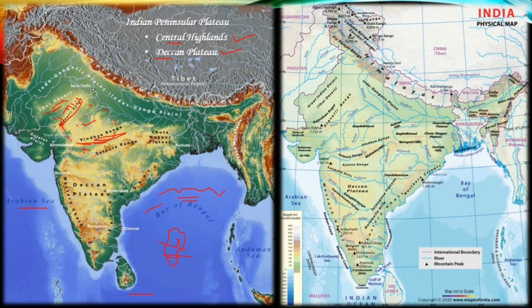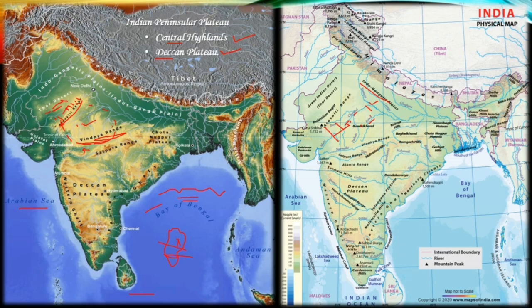In the Central Highland region, the major rivers are Chambal, Sindh, Betwa, and Ken, which flow from southwest to northeast. This also tells us that the slope of this area is from southwest to northeast — in the direction these rivers flow. All these rivers are part of the Ganga river system. The Central Highlands are wider on the west side as compared to the eastern part.